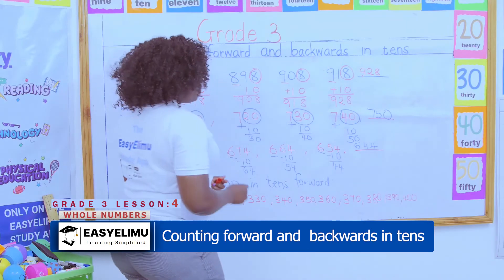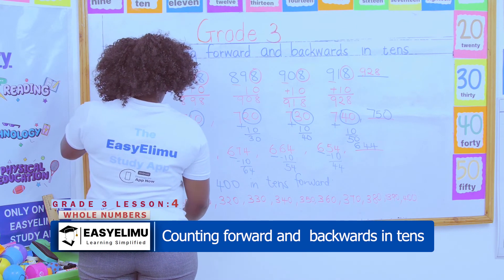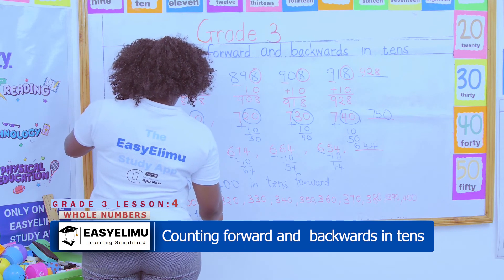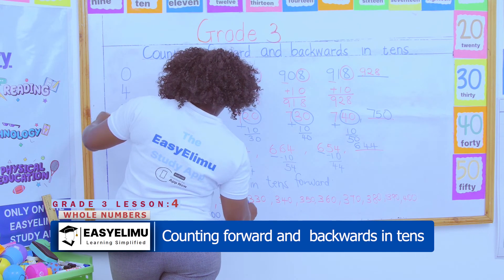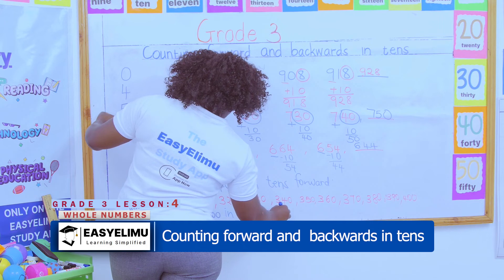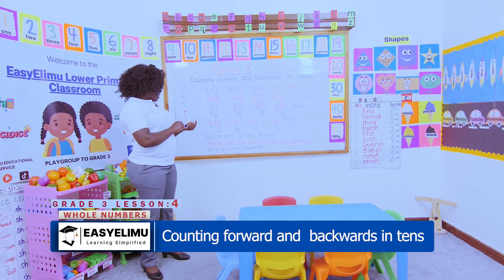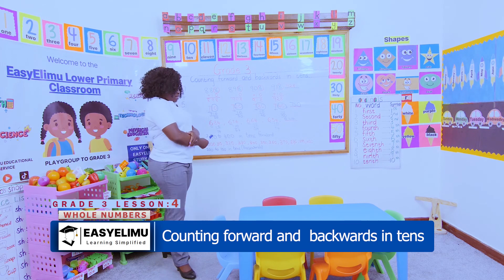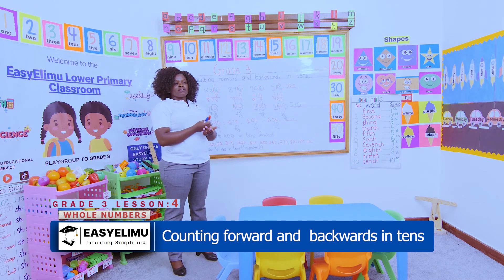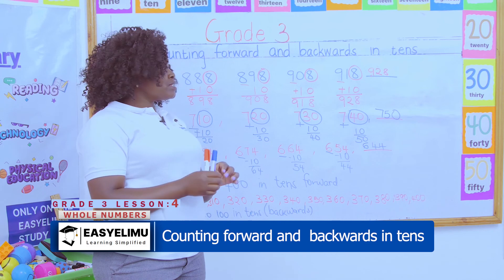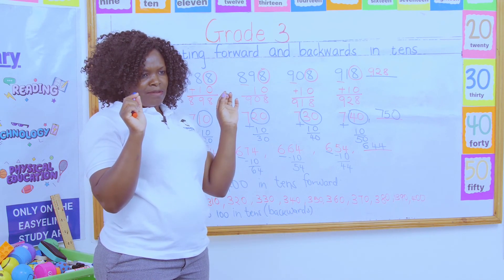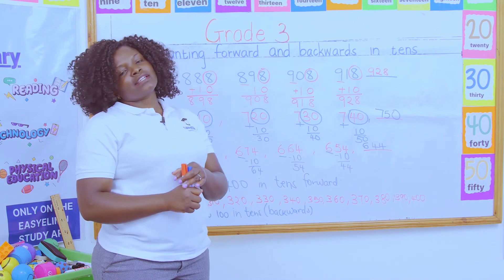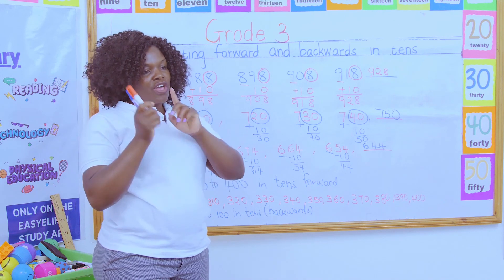And lastly, 400. Now your question: count from 200 to 100 — this is backward — in tens. How will your numbers flow? You can consult your guardians, parents, or siblings. Any question about counting numbers forward or backward — in ones, tens, fives, or twos? No problem! We have understood this concept well. We've done it in Grade 1, Grade 2, and now Grade 3. I wish you well and hope to see you in the next lesson. Bye!